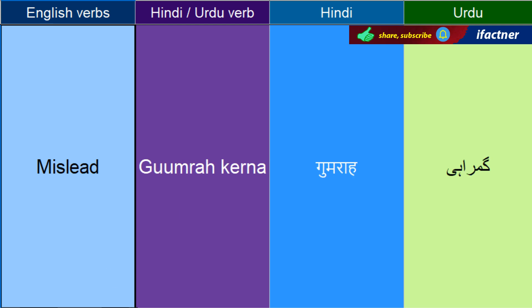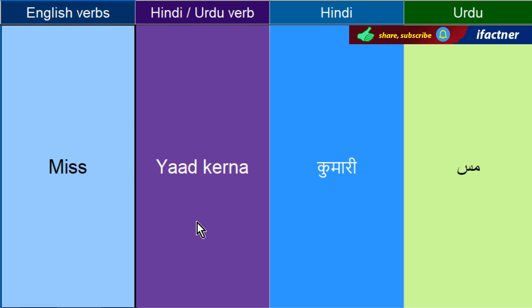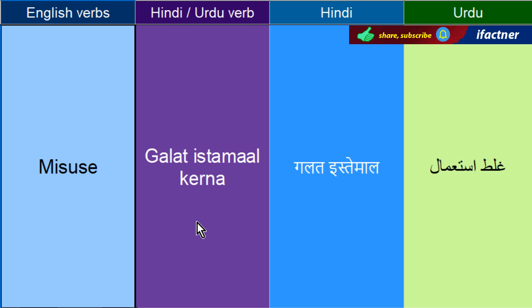Gumraha kerne ko hum kehete hai — Mislead. He misled me — usnay mujhay gumra kiya tha. Yaad kerne ko kehete hai — Miss. I miss you. Galti kerna — Mistake. It was my mistake. I made a mistake. I was mistaken. Galat istamal kerne ko kehengay — Misuse. Use kerna, istamal kerna, misuse kerna — galat istamal kerna, abuse kerna.